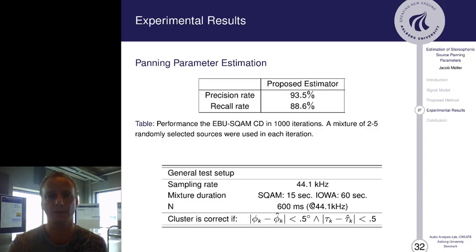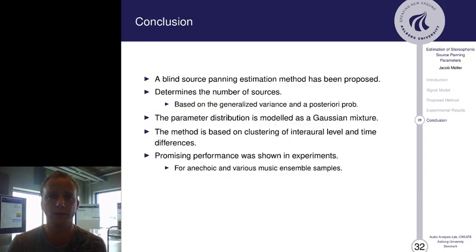That was the last experimental result. And now I'll conclude on the ICASSP proposal. We have proposed a blind source panning estimation method, which determines the number of sources, as shown from the precision and recall rates, based on the generalized variance and the posterior probability of the assignments. The parameters distribution is modeled as a Gaussian mixture, and the method was based on clustering of interaural level and time differences. And we showed promising performance in the experiments where we used the EBU-SQAM and the Iowa dataset, which contains anechoic and also various music ensemble samples.